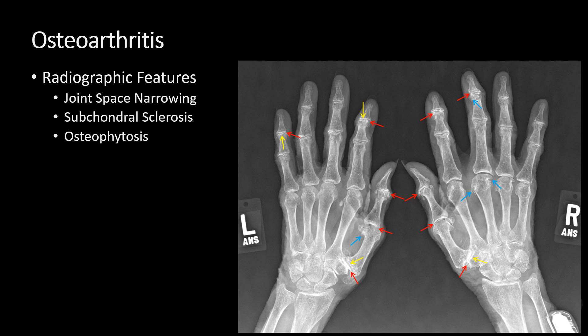Now I'll discuss osteoarthritis. The red arrows represent joint space narrowing throughout the hands and wrists, with the most severely involved joints identified. This distribution is very typical for osteoarthritis. Notice how the DIP joints are involved, unlike rheumatoid arthritis. The yellow arrows represent subchondral sclerosis — notice the increased periarticular attenuation, in contrast to the periarticular osteopenia seen with rheumatoid arthritis. Finally, the blue arrows represent osteophytes.